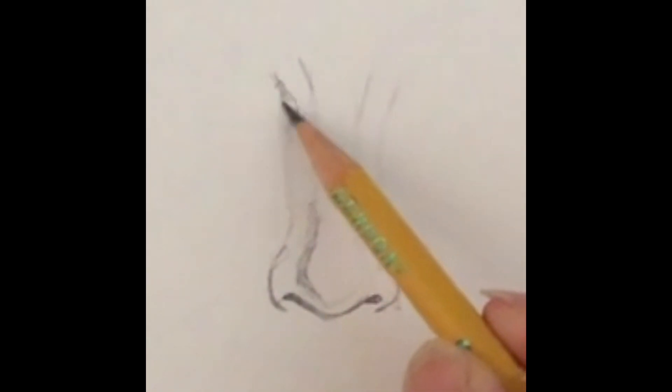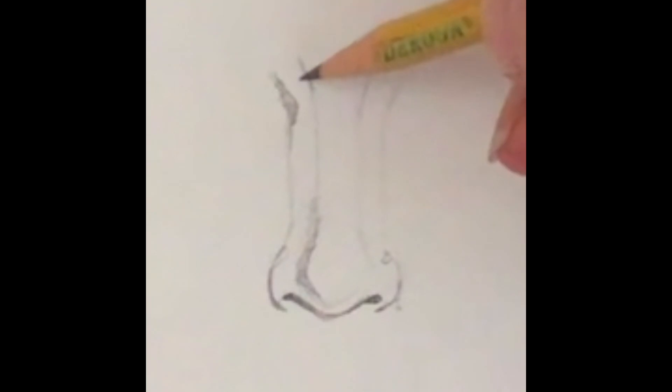I'm going to shade along where the eye socket is and then also the top of the ridge of the nose and connect that. This is just a regular pencil but I could also be using a 2B pencil, it's just about the same softness.